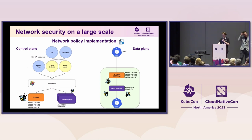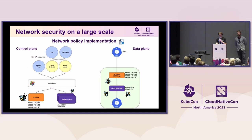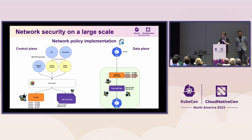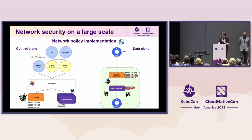There is also enforcement of policies. On the data plane, when pod A is trying to communicate with pod B and there is a network policy on the ingress side of pod B, when the packet comes in and the network policy enforcement system is triggered, it first maps the IP of the incoming pod to an identity using the IP cache, and then checks if that identity exists in pod B's policy map. If it does, it allows traffic; if not, it drops the traffic.